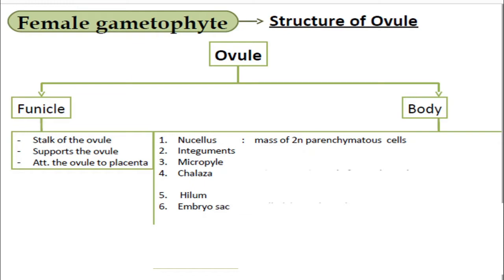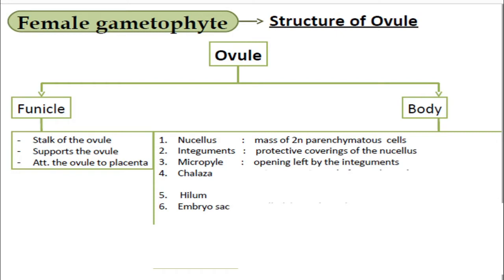The nucellus is a mass of diploid parenchymatous cells (2n), meaning all cells of the nucellus are diploid. The integuments are the protective coverings of the nucellus — the structures surrounding the nucellus. Since it is plural, it means there is more than one protective layer. The micropyle is the opening left by the integuments.